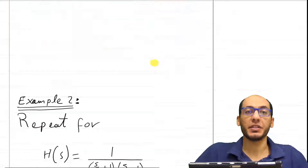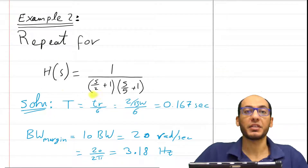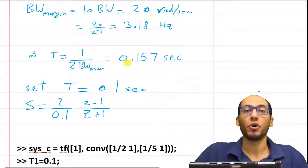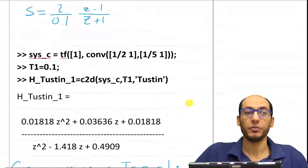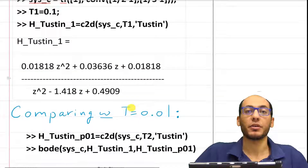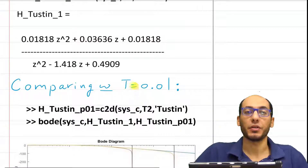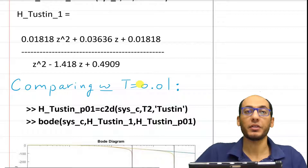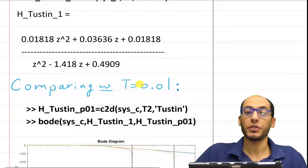I'm going to leave the second example problem for you guys — it has the same essence but with different coefficients. I'm providing the final answer so you can compare. The document is in the description of the video below. If you need the Arabic version of this video, it's also in the description. Make sure to share this video if you found it useful. Thanks for your attention.